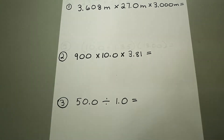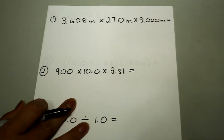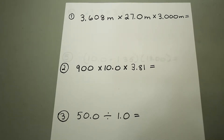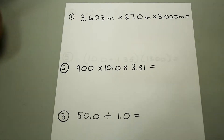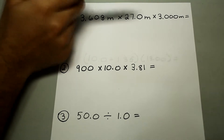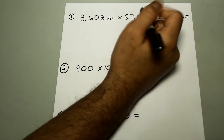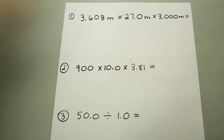Now that we know how to identify how many significant figures a number has, let's actually do some multiplication and division with significant figures. The first problem we have is 3.608 meters times 27.0 meters times 3.000 meters. One of the first things to do is identify which of these factors has the least number of significant figures. In this case that's 27.0 — it only has three significant figures.